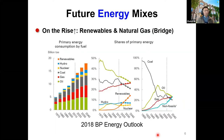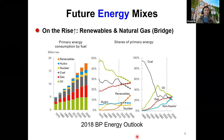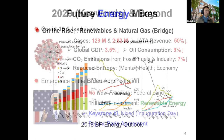Considering global warming, when we look at future energy mixes, the 2018 BP Energy Outlook concluded that renewable energies and natural gas would be on the rise, with natural gas serving as a bridge fuel going forward. I only show 2018 data rather than 2020, because 2020 was anything but normal.